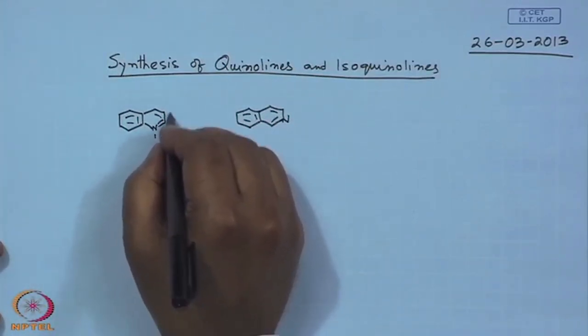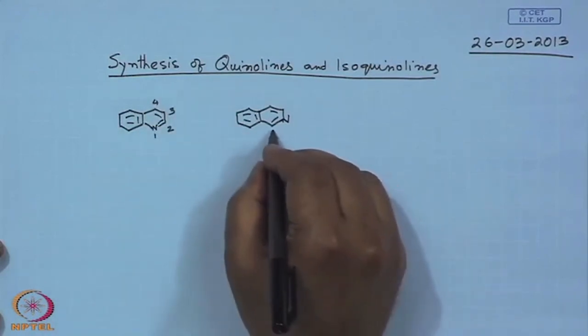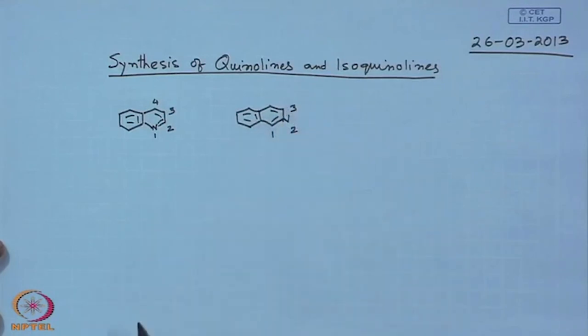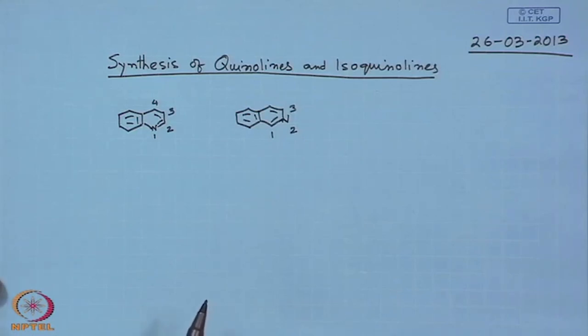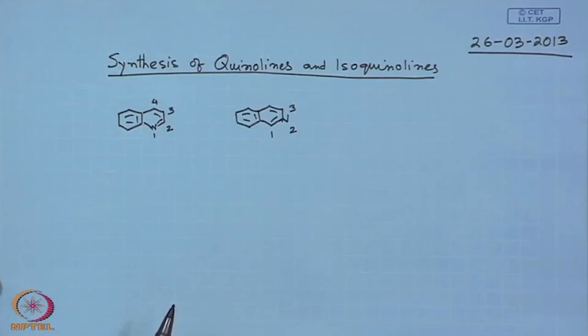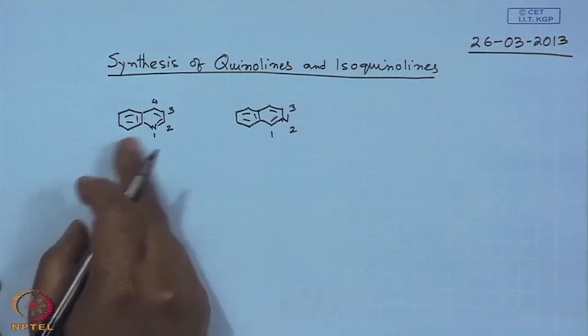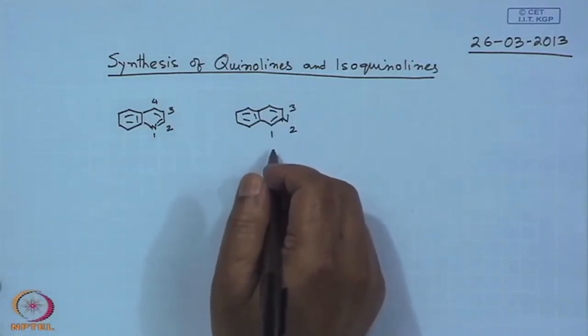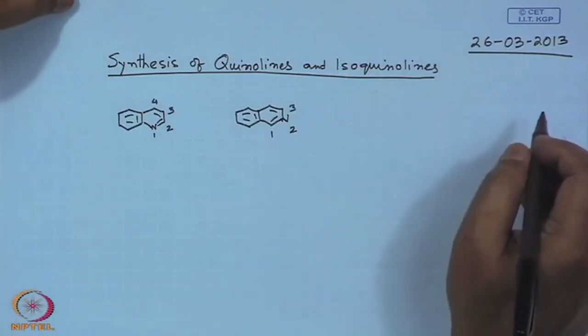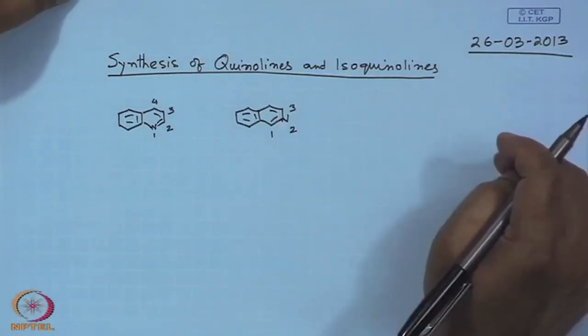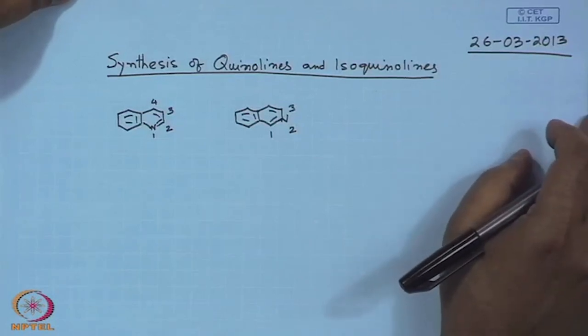The numbering starts from 1, 2, 3 in quinolines; in isoquinolines it is 1, 2, 3. These nuclei are very important in the pharmaceutical industry as well as in natural products chemistry. Quinine is a natural product containing the quinoline nucleus, and the isoquinoline nucleus can be found in the famous natural product morphine, where it is in a hydroaromatic form rather than fully aromatic.